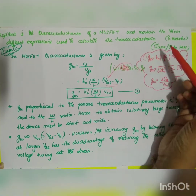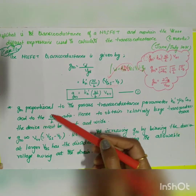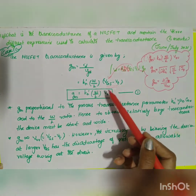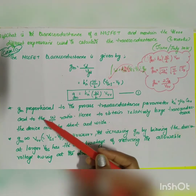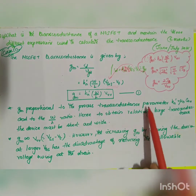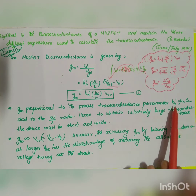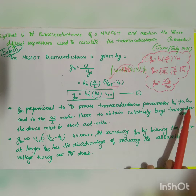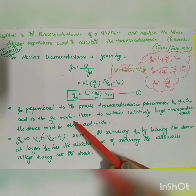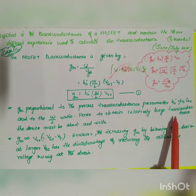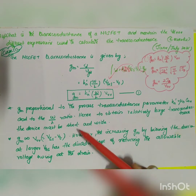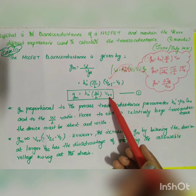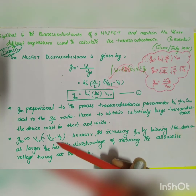This is Case 1 — the first expression. GM is proportional to the process transconductance parameter KN' (which equals μn × COX) and to the W/L ratio. Hence, to obtain a relatively large transconductance, the device must be short and wide. GM is also proportional to the overdrive voltage VOV = VGS − VT.